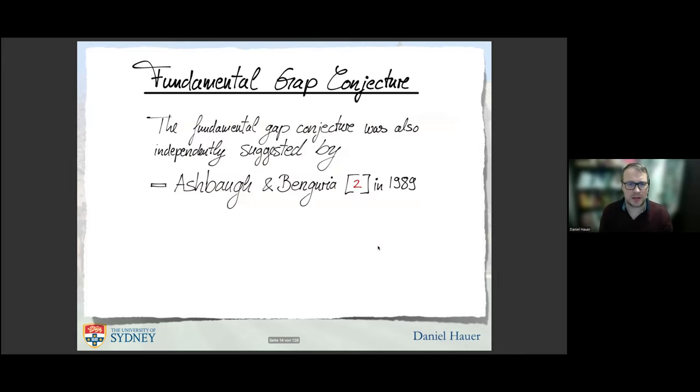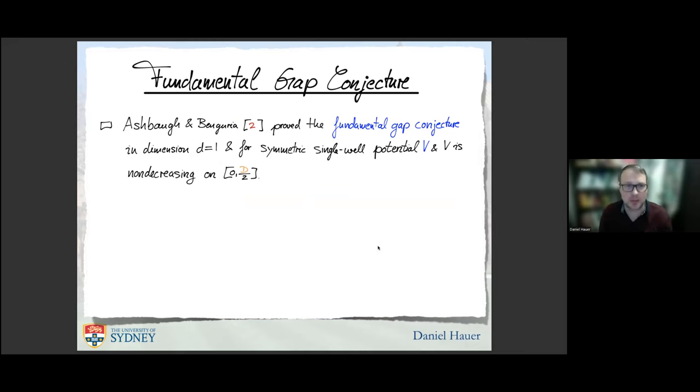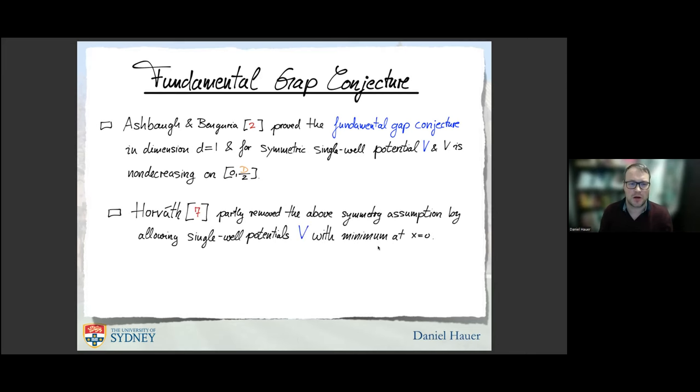The fundamental gap conjecture was also independently suggested by Ashbaugh and Banguria in 1989, and by Professor Yau in 1986. But they all did not prove it. Ashbaugh and Banguria proved the fundamental gap in dimension one when the potential V is symmetric and single-well, and V is non-decreasing on the interval zero to D/2. Horvath partially improved the symmetry assumption by allowing single-well potentials with a minimum at x equals zero. And LaVine, Richard LaVine, he proved finally the fundamental gap conjecture for general convex potential in dimension D equals one for homogeneous Dirichlet boundary condition.